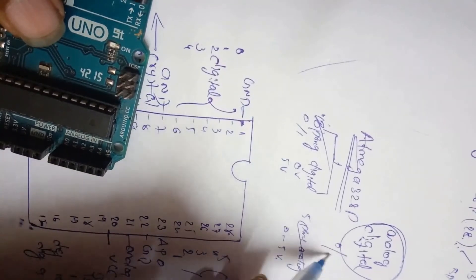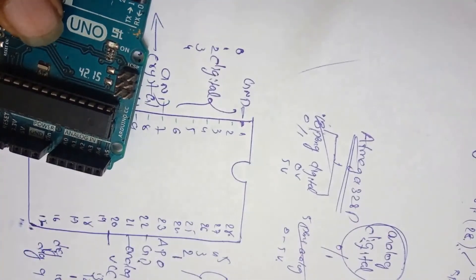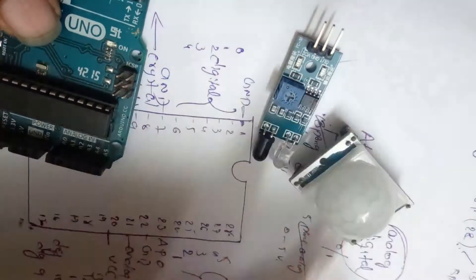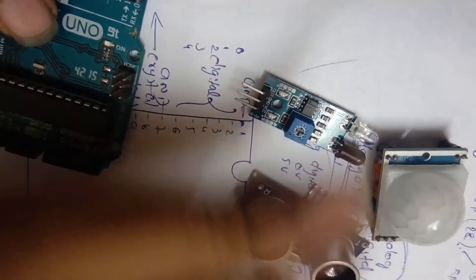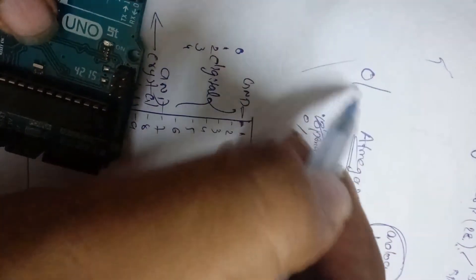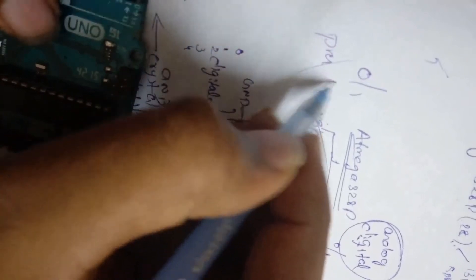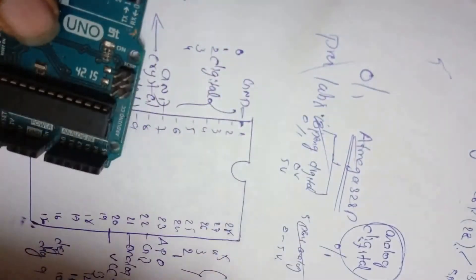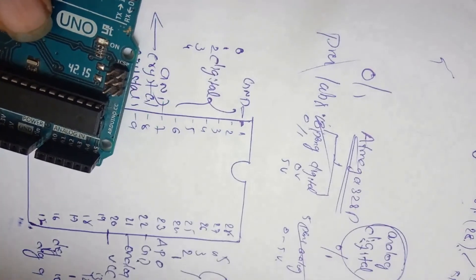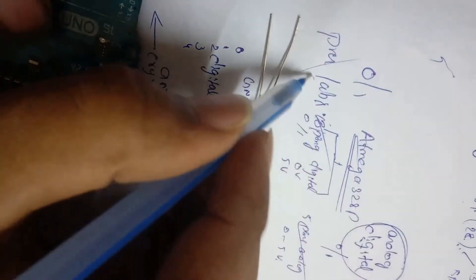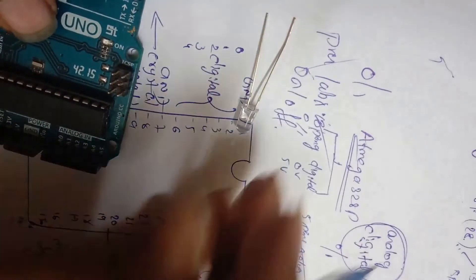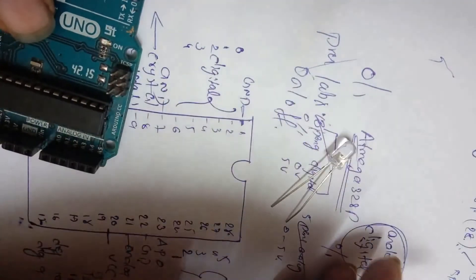Digital means either 0 or 1. If you want to control sensors like IR sensor, PIR sensor or ultrasonic sensor, all these sensors use data either 0 or 1, either present or absent. For these types of sensors or LEDs, either on or off, for these types of devices we use digital pins.